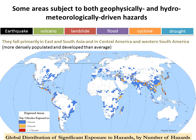Some areas are subjected to both geophysical and hydro-meteorologically driven hazards, and these areas fall mainly in East and South Asia, as denoted by the warm color here, and in Central America and Western South America. These areas are more densely populated and developed than average, leading to high potential for casualties and economic losses.